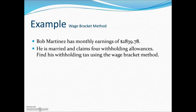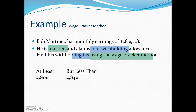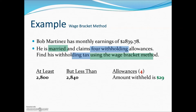Let's take a look at this example. Bob Martinez has monthly earnings of almost $2,900. He's married and claims four withholding allowances. To find his withholding tax using the wage bracket method, we identify the number of withholdings — in this case four — and use the married table, which can be found on page 243 of the textbook. Looking for the interval that contains his monthly earnings, we find at least $2,800 but less than $2,840. Lining that up with four allowances, the married table gives us $29, so $29 would be deducted from his gross pay and sent to the IRS as his federal withholding tax.